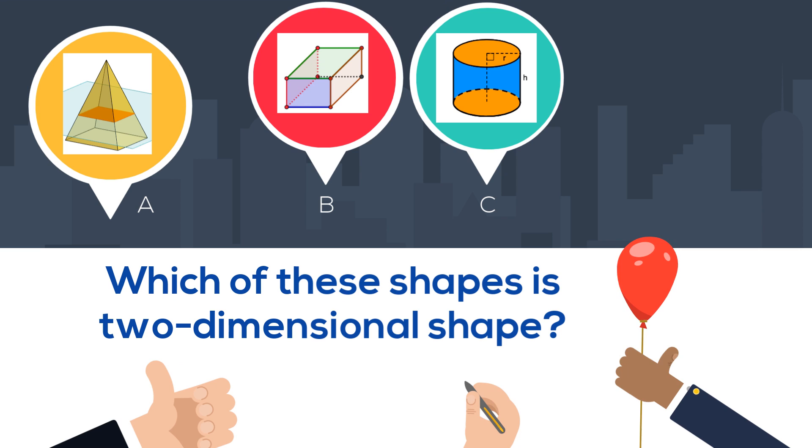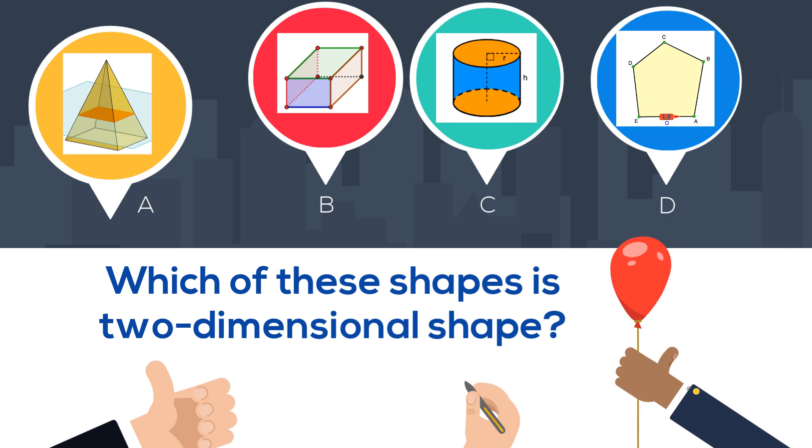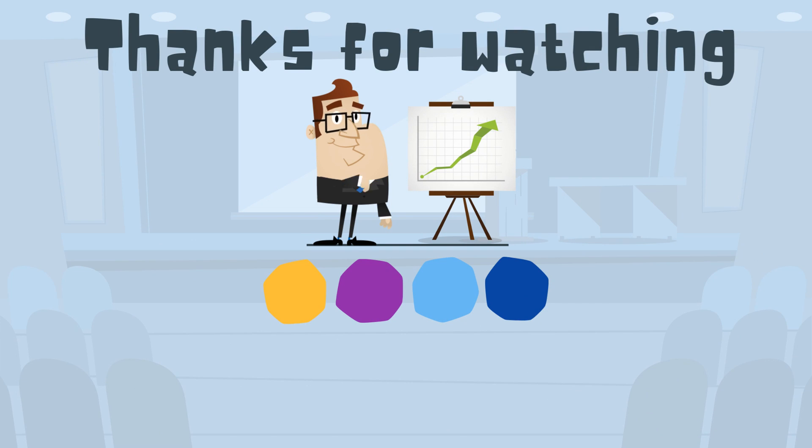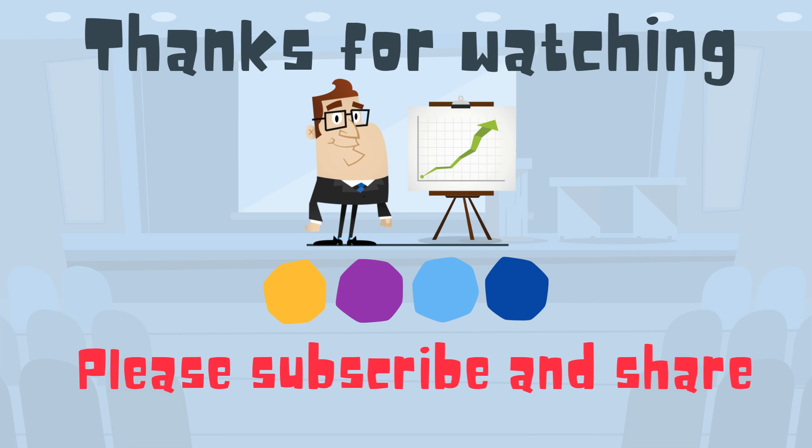B has length, width, and height, so it must be D. D is your 2D shape because it lays flat.